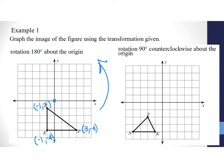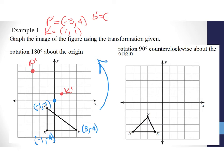Starting with point P at (3, -4), P prime becomes (-3, 4). For K at (-1, -1), K prime becomes (1, 1). For E at (-1, -4), E prime becomes (1, 4). I plot these new points and connect them, ending up with the triangle rotated 180 degrees around the origin.